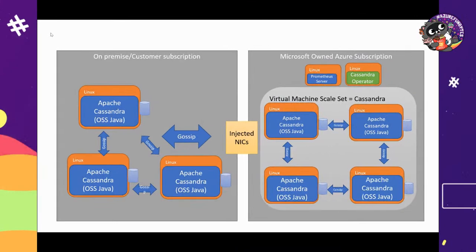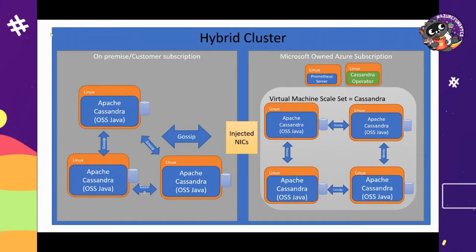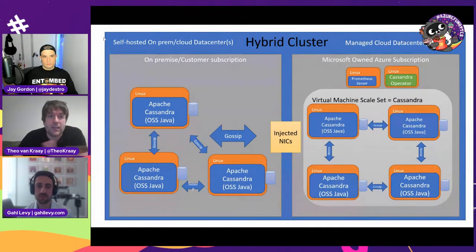The nice thing with Cassandra managed instance is we have this unique capability of allowing people to configure hybrid clusters. So if you deploy a managed data center in a managed instance for Apache Cassandra, that data center can join an existing self-hosted cluster ring. What you'll have is self-hosted on-premise or in the cloud — wherever it happens to be — and then a managed data center in the cloud.